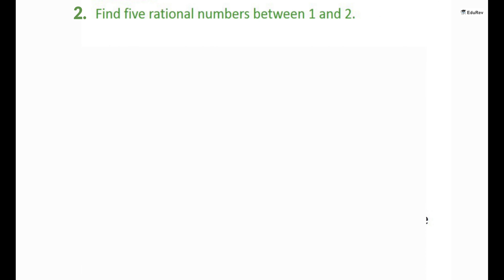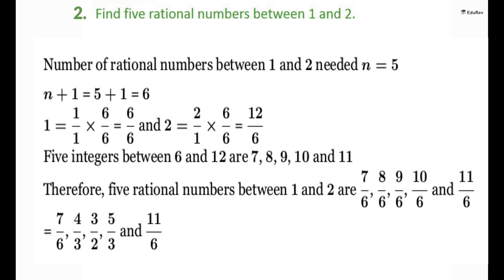Let's take another example. Find 5 rational numbers between 1 and 2. We can approach this problem in at least two ways. The first solution is that we can find all 5 rational numbers in one step. Since we want 5 numbers, we write 1 and 2 as rational numbers with denominator 5 plus 1, that is 6. So we have to find the rational numbers between 6 by 6 and 12 by 6. Thus, you can check that 7 by 6, 8 by 6, 9 by 6, 10 by 6 and 11 by 6 are all rational numbers between 1 and 2 — these are the 5 rational numbers we are looking for.